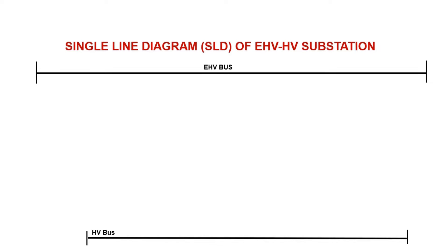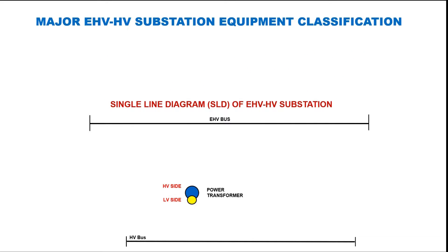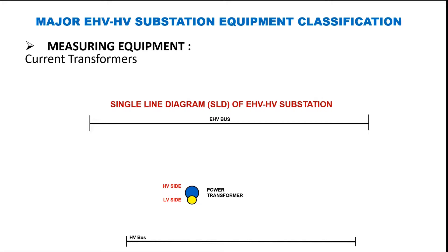One must note that the transformer is the main equipment — we need to measure its current and voltage, protect it, and carry out maintenance work. Based on this, substation equipment are classified: first, measuring equipment such as current transformer (CT) and potential transformer (PT), which indirectly help to measure power. CT and PT are placed in the single line diagram as shown here.